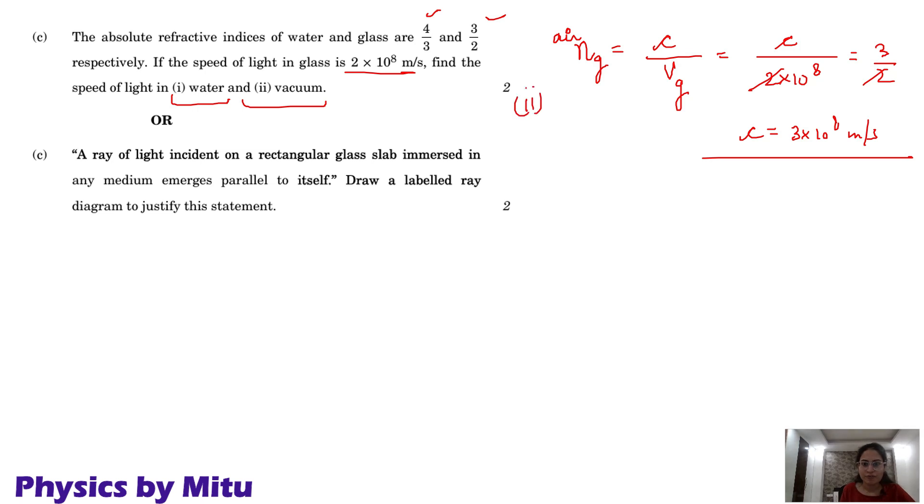This is the second part. Now for first part, refractive index of water with respect to air is given to you, which is 4 by 3. Now this is C upon speed in water, speed of light in air upon speed of light in water.